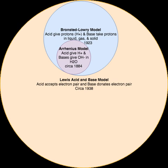The Lux-Flood acid-base theory was a revival of the oxygen theory of acids and bases, proposed by German chemist Hermann Lux in 1939, further improved by Håkon Flood circa 1947, and is still used in modern geochemistry and electrochemistry of molten salts. This definition describes an acid as an oxide ion acceptor and a base as an oxide ion donor. For example: MgO + CO2 → MgCO3, and CaO + SiO2 → CaSiO3. This theory is also useful in the systematization of the reactions of noble gas compounds, especially the xenon oxides, fluorides, and oxofluorides.